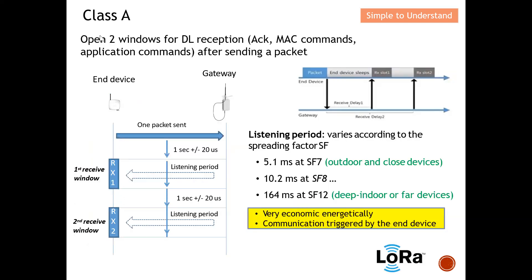Class A has the best battery lifetime but the longest latency. Remember, all the different device classes only affect the downlink. Downlink means gateway to the end device; uplink means end device to the gateway. For Class A, when the gateway has a message to send to the end device, it cannot just send the message directly — this is because the end device could be sleeping and may not be able to receive the message. Therefore, the gateway needs to wait patiently for an uplink message.